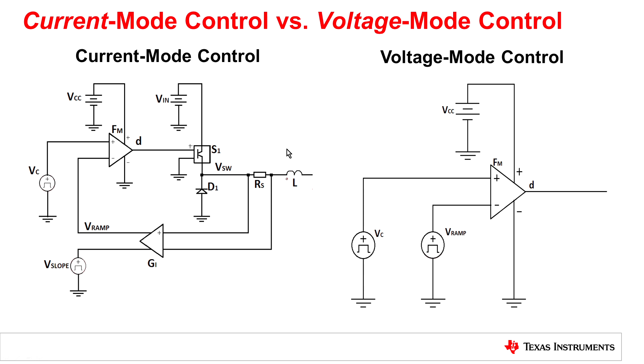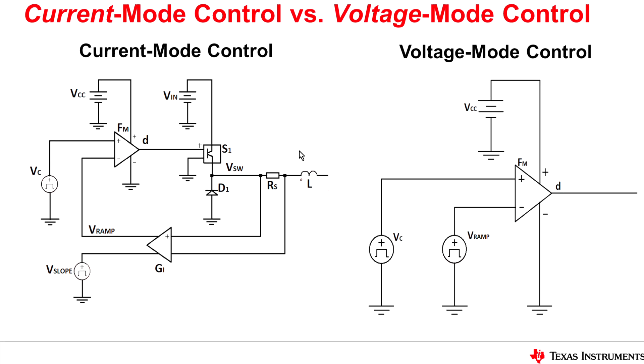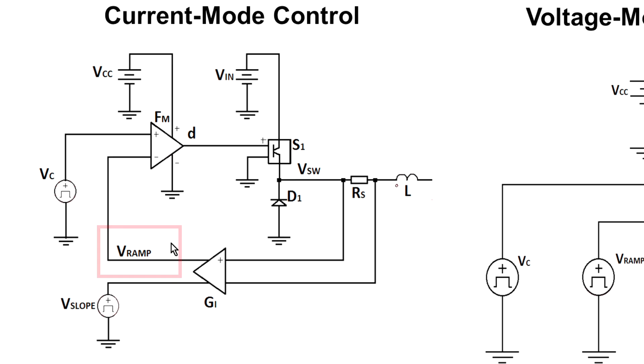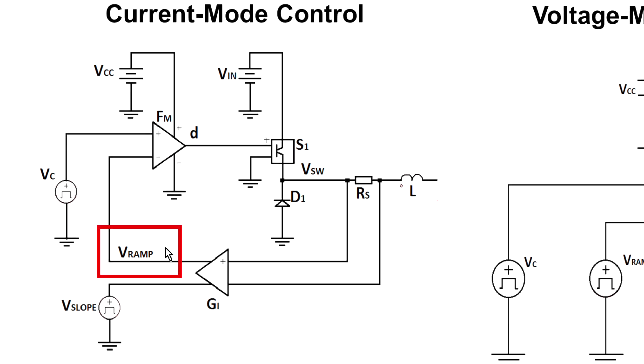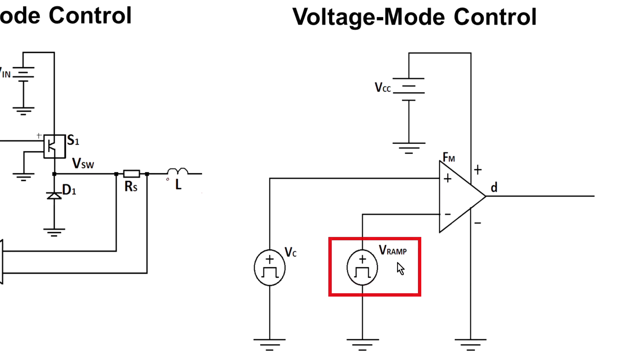Let us look at the differences between current mode control and voltage mode control. In a current mode control the comparing ramp is generated by looking at the ripple current flowing through the inductor, whereas in voltage mode control the internal comparing ramp is a fixed voltage.